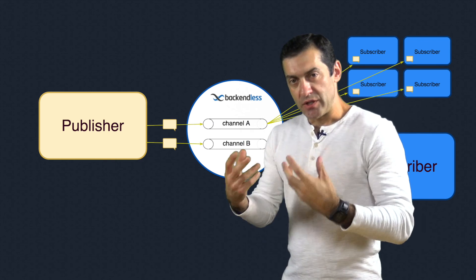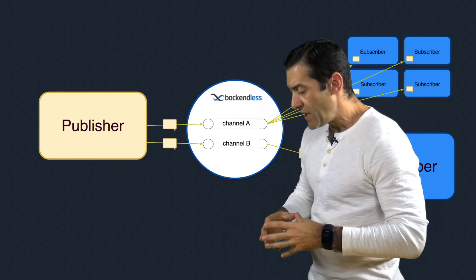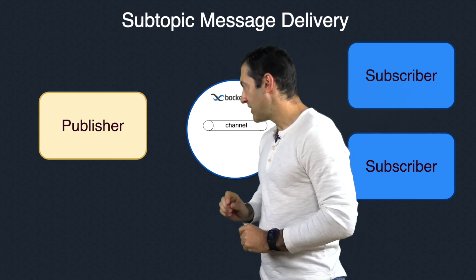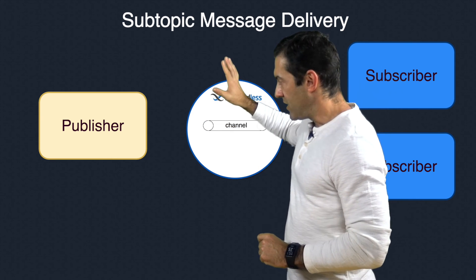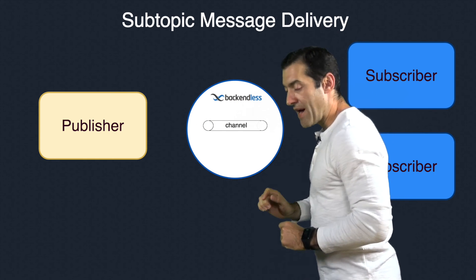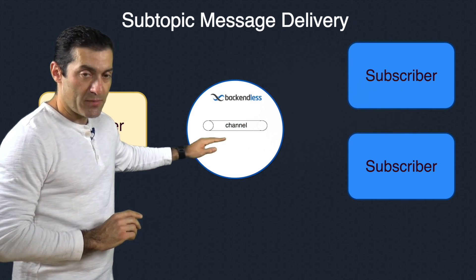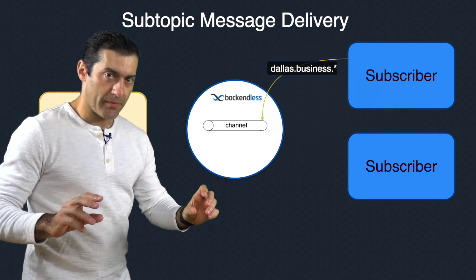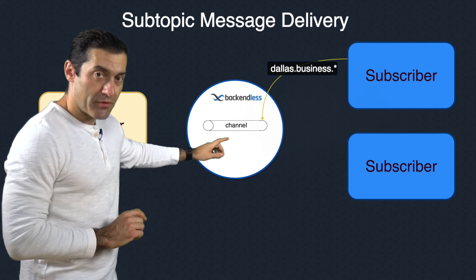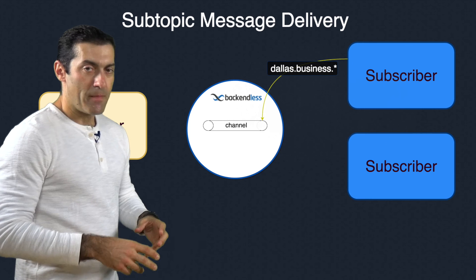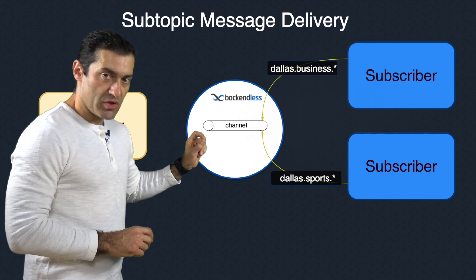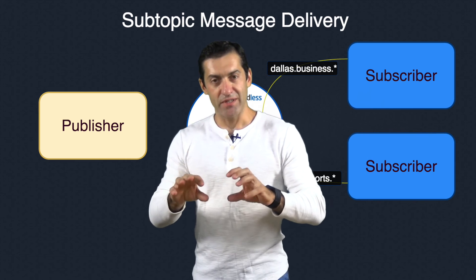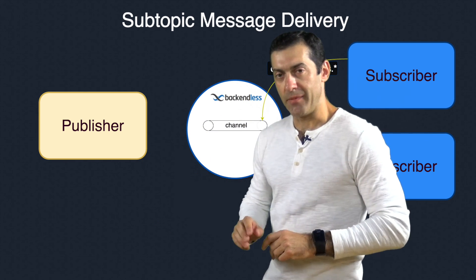Another way to distribute messages using Backendless is using a feature called subtopics. With subtopics, it's very similar to channels with a slight twist. Consider a publisher and a set of subscribers. The subscribers would be subscribing to a subtopic called Dallas.Business.Star. Another subscriber expresses interest to receive messages published to subtopic Dallas.Sports.Star. It's the same channel, but with different subtopics that have this structure with a dot delimiter.